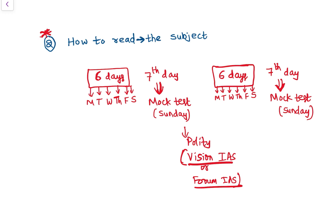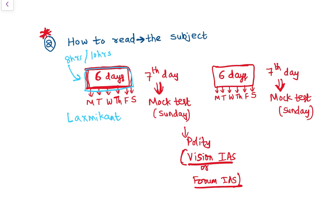Next, how to read the subject. This is very important and applies not just to polity but to any subject for UPSC. The first thing is: read any subject continuously for six days. I see many aspirants make the mistake of reading two or three subjects in a day or two to three subjects in a week. Instead, my approach is to read one subject for six days continuously. If you are reading eight to ten hours a day, read Lakshmikant every day for six days.